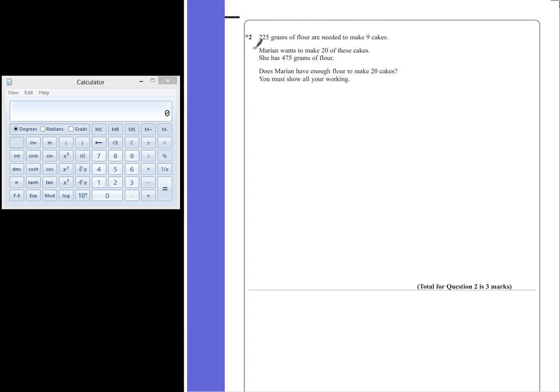So we have the amount of flour we need for 9 cakes. And we can't just double this recipe because that would only make 18 cakes. So what we are going to find out first is how much flour is needed for 1 cake.